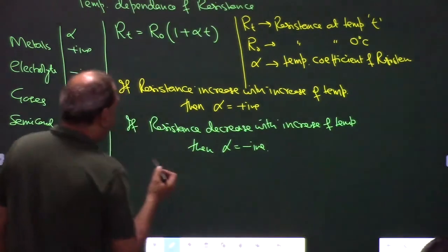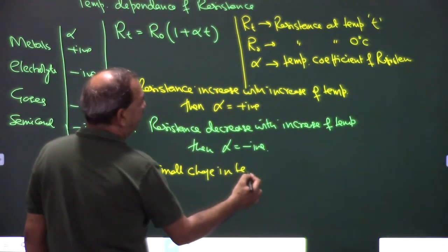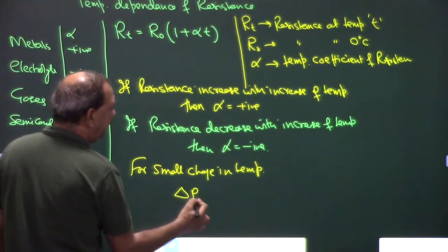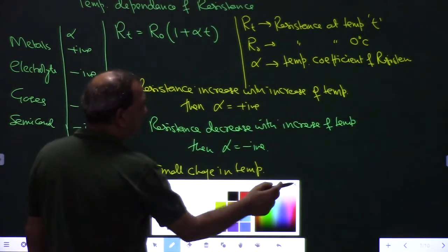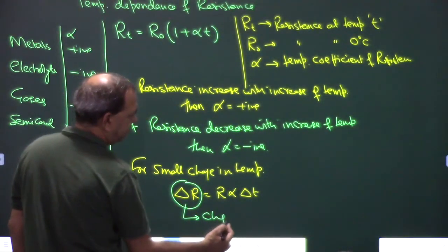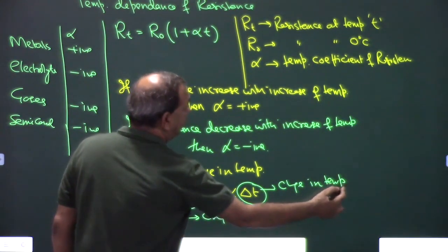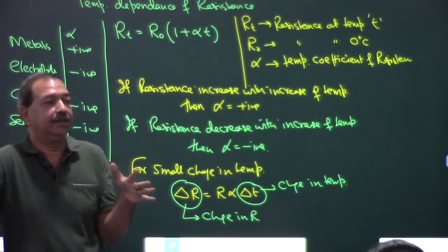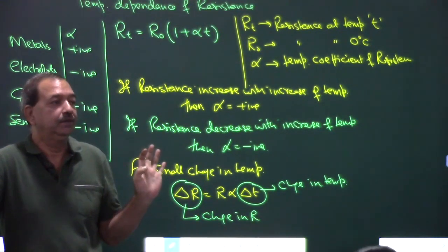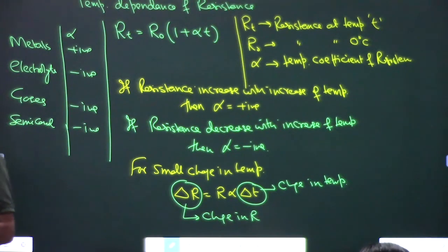For small changes in temperature, the formula simplifies to: ΔR = R₀ α ΔT, where ΔR is the change in resistance and ΔT is the change in temperature. This formula applies for small changes (up to about 10%). For large changes — like if resistance doubles — use the full formula R_T = R₀(1 + αT). This concludes the first part of current electricity.